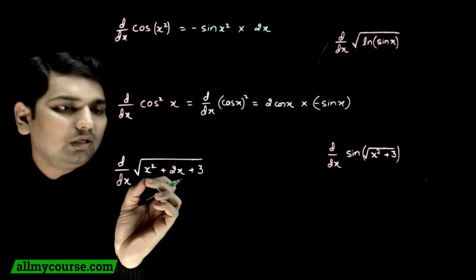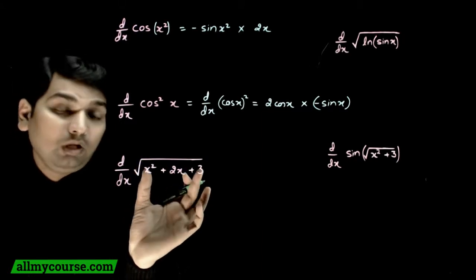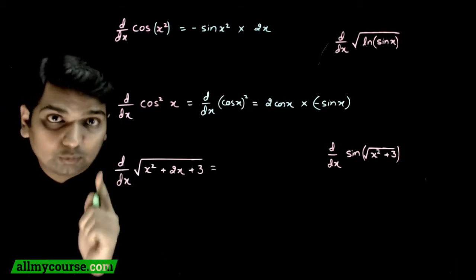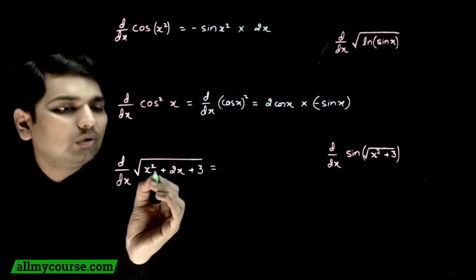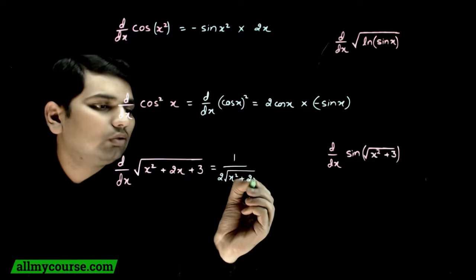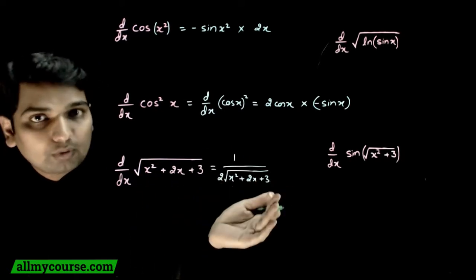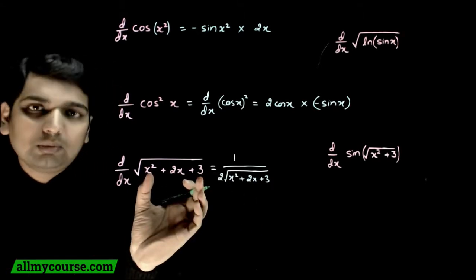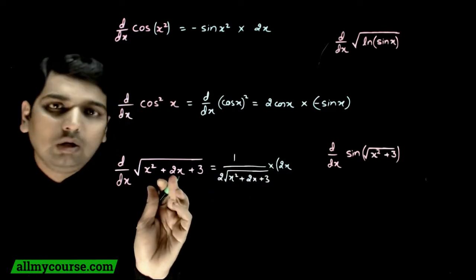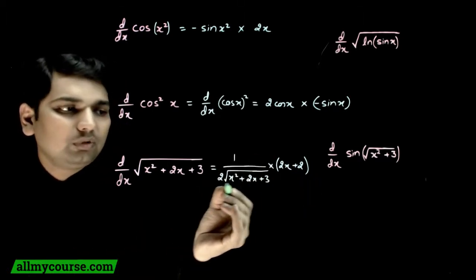Aapka agla expression hai: differentiation of √(x²+2x+3). Now again, process is same — root ke andar kya hai uske baare mein mat sochiye. Sochiye ki root ka differentiation kya hota hai. Root x ka differentiation hota hai 1/(2√x). Isliye √(x²+2x+3) ka differentiation kya hoga: 1/(2√(x²+2x+3)), multiplied by stuff ka differentiation. Stuff kya hai — x²+2x+3. x² ka differentiation 2x, 2x ka differentiation 2, aur 3 ka differentiation 0. To expression aa gaya: (2x+2) / (2√(x²+2x+3)).